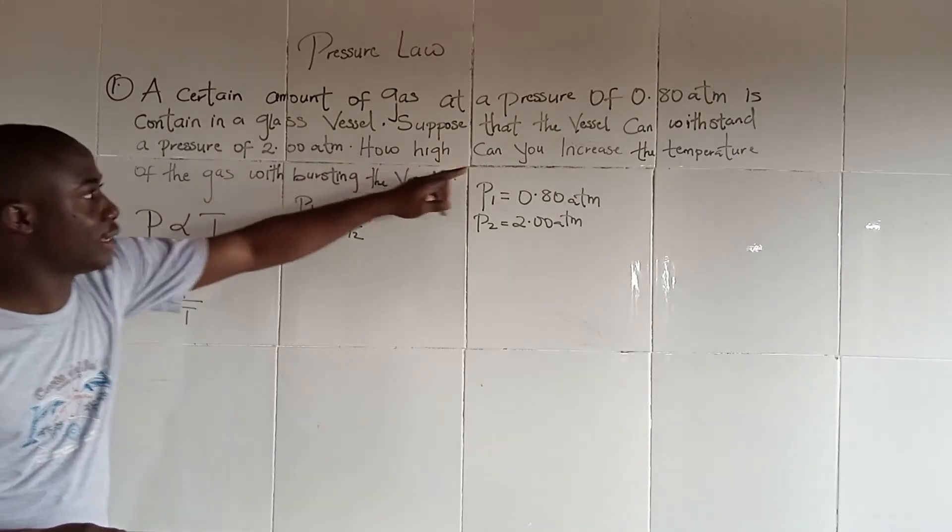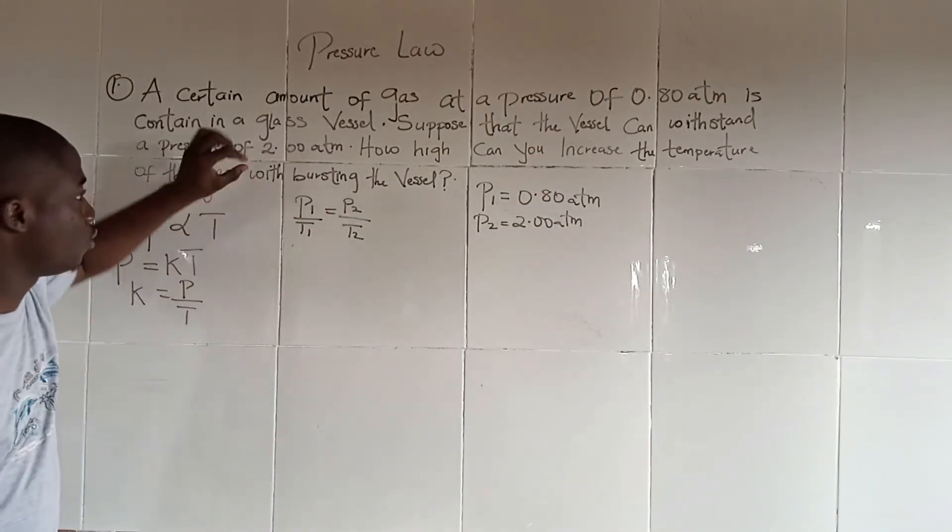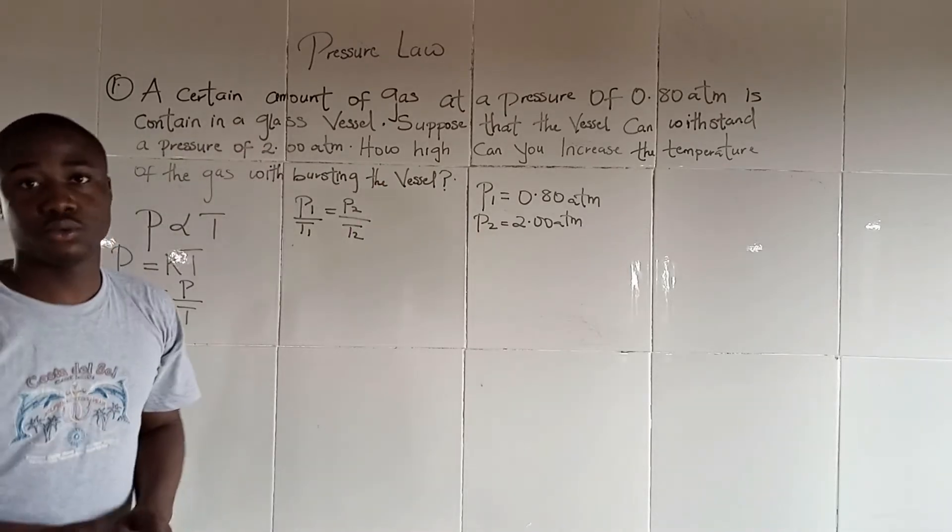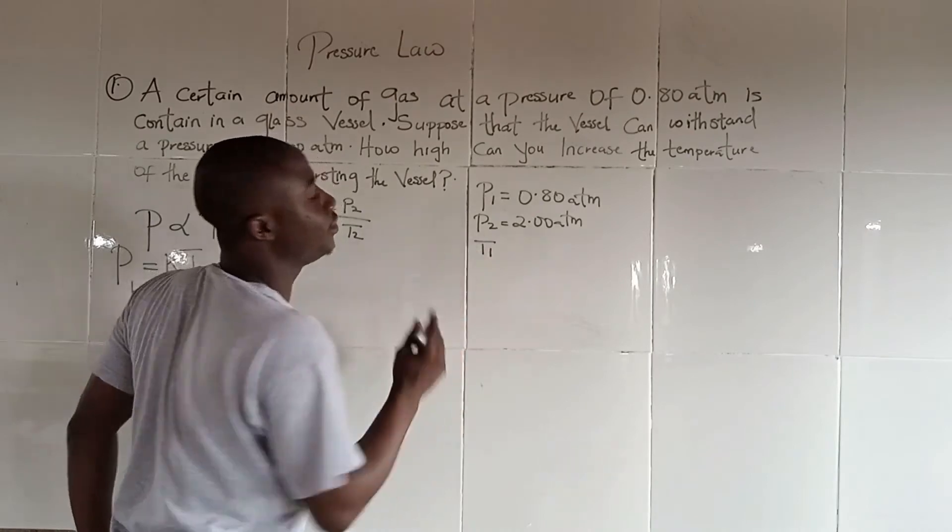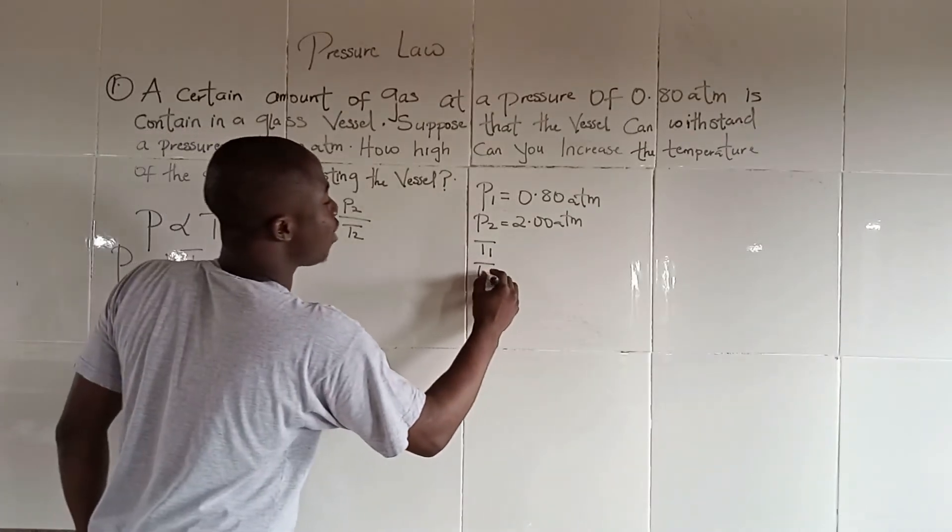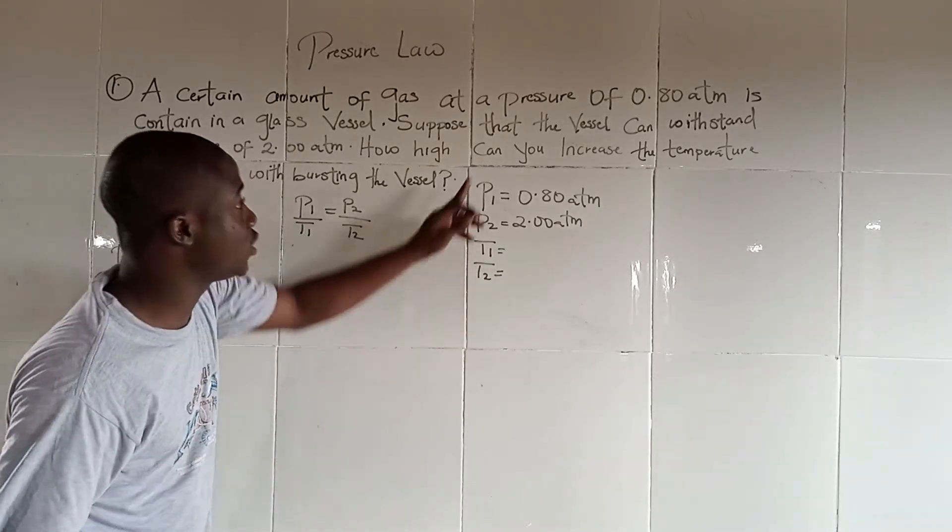How high can you increase the temperature of 0.8 atmosphere? What is the first temperature and what is the second temperature? Because this question says you should get the second temperature.